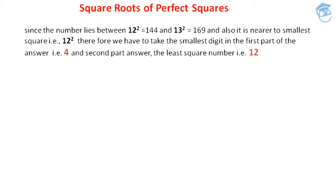Therefore, what we have to do here is we have to take the smallest digit in the first part of the answer, that is 4. Since the number 153 is very nearer to the smallest square number, we take the smallest digit 4 in the first part of the answer. And coming to the second part of the answer, we have to take always the least square number, that is 12.